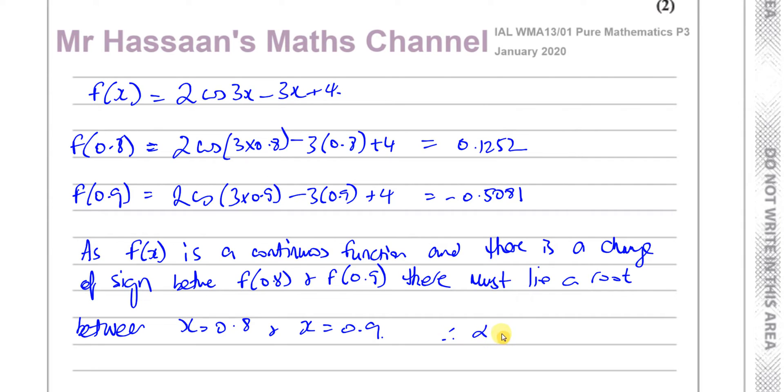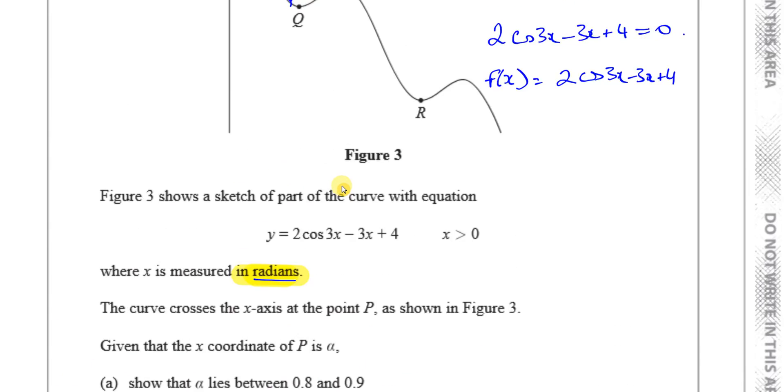Between x equals 0.8 and x equals 0.9. Therefore, alpha is between them. So that's fine. There must lie a root, and we'll call it alpha, put it in brackets here better, between x equals 0.8 and x equals 0.9, and that's a complete answer here.